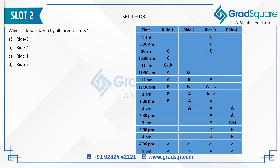Question 3: Which ride was taken by all 3 visitors? Ride 4 was taken by only Anjali and Bibasha. Ride 3 was taken by only Anjali and Chitra. Ride 2 was taken by only Anjali and Bibasha. Ride 1 was taken by all 3 visitors — Anjali, Bibasha, and Chitra. Option C is the answer.